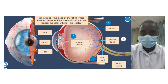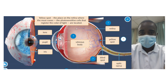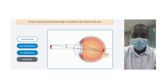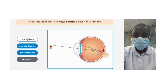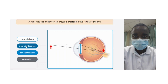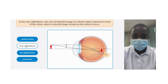The yellow spot, also known as the macula, is a small area on the retina where the highest concentration of cones is located. Cones are the photosensitive cells that register the color of light. The Human Eye Structure Simulation helps students understand the importance of the yellow spot in color vision and central vision. By exploring its function, students can see how it contributes to the perception of color and detail.